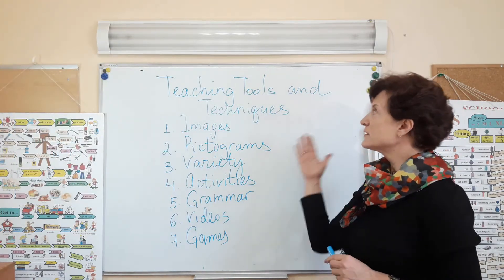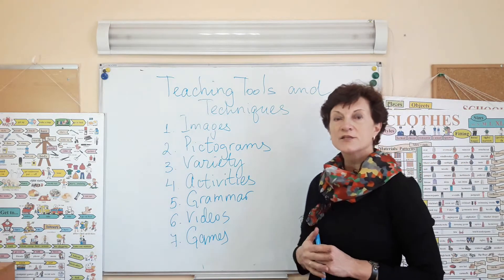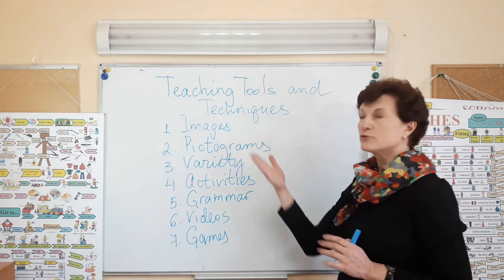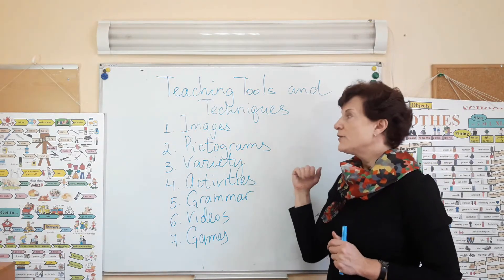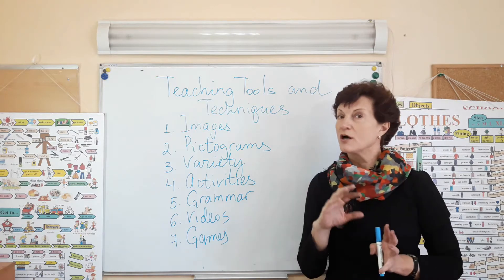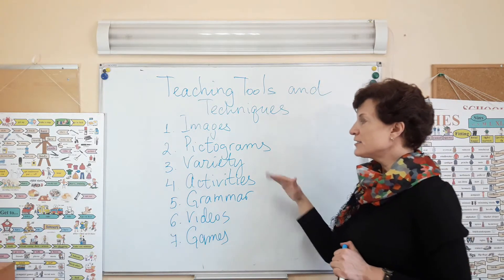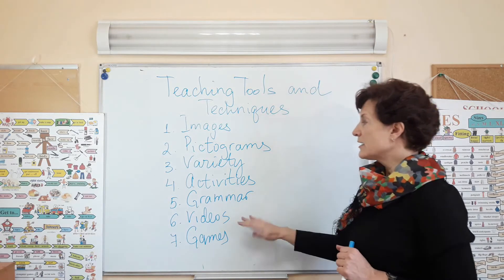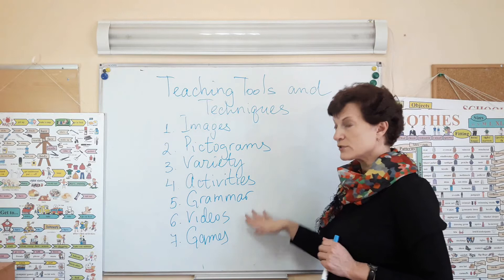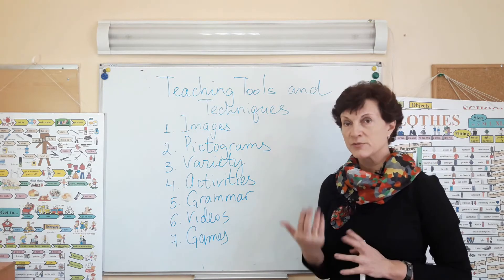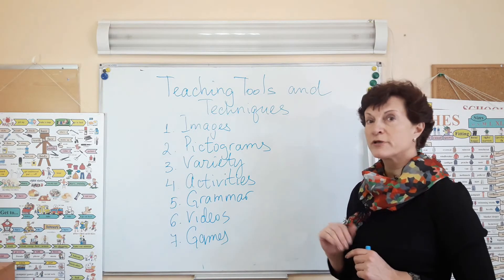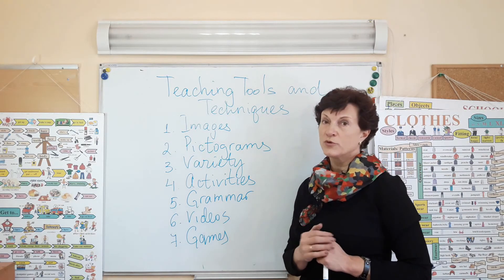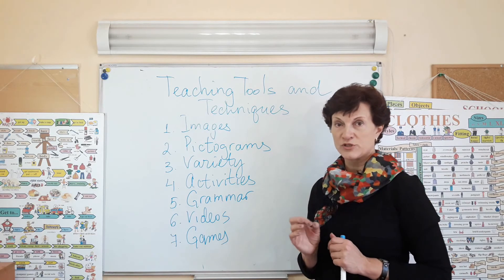In this lecture, we overviewed the teaching tools and techniques that should be used when teaching six-year-olds. They include colorful images, consistently used pictograms, a variety of activities, implicit grammar instruction, and the use of videos to develop language accuracy — because students parrot and mime really well. Games are also one of the most important activities in the language classroom.